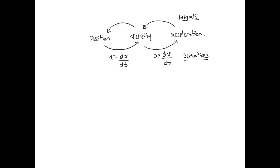Let's stay focused on derivatives for now. If I do a little plot here — time on one axis, distance traveled on the other, changing with time — and let's say it's a linear relationship, a straight line. In this case, x and t are perfectly proportional: as t increases, x increases at the same rate. If 1 second has passed, it's traveled 1 meter; if 3 seconds have passed, it's traveled 3 meters. Note that t is in seconds [s] and x(t) is in meters [m].